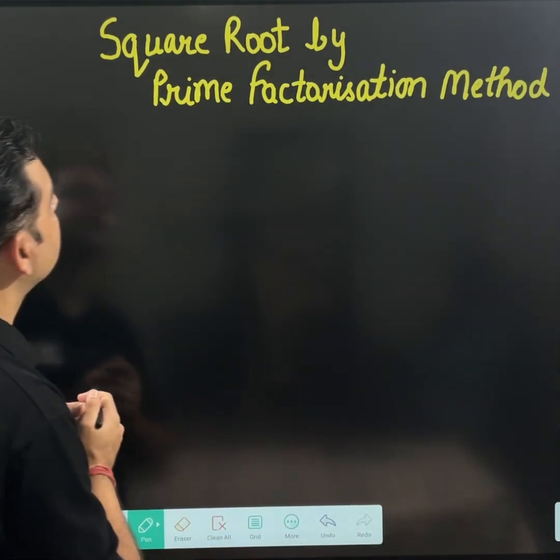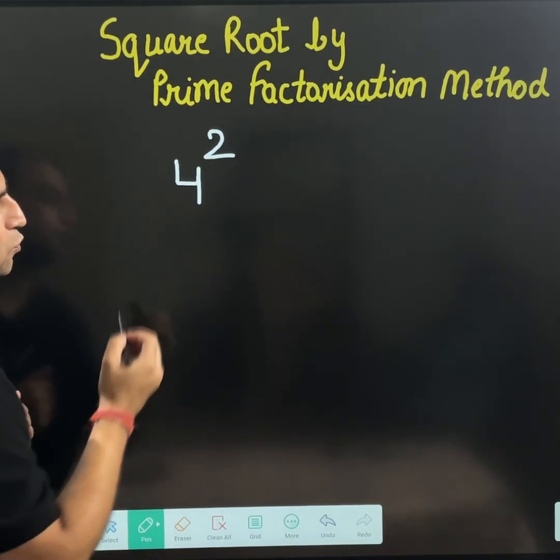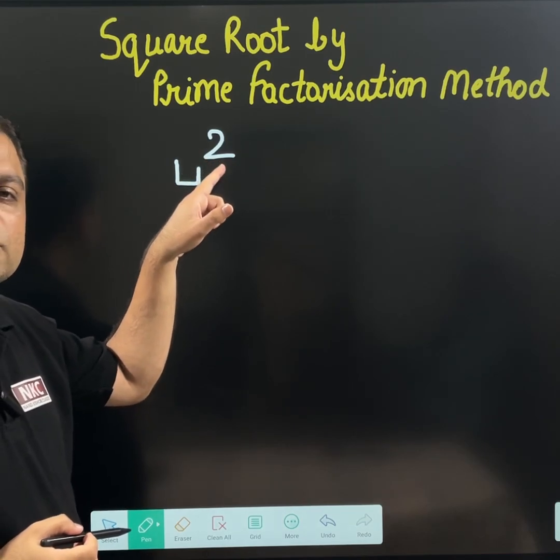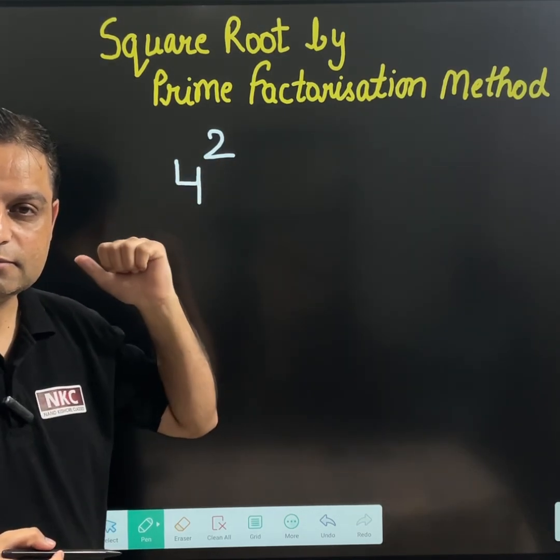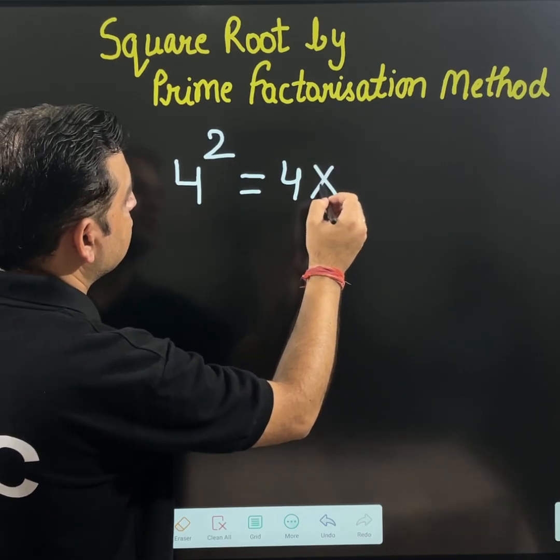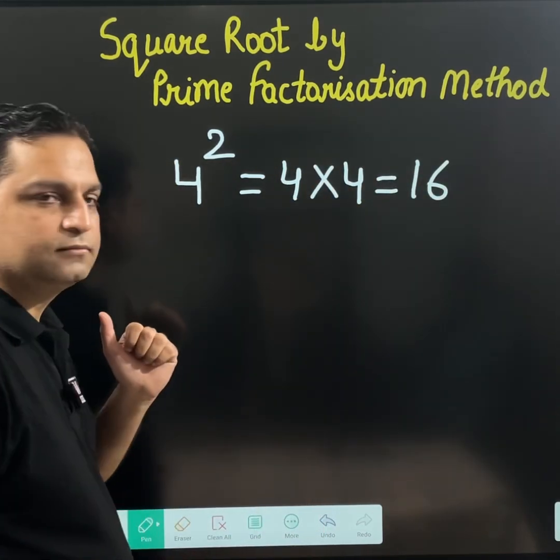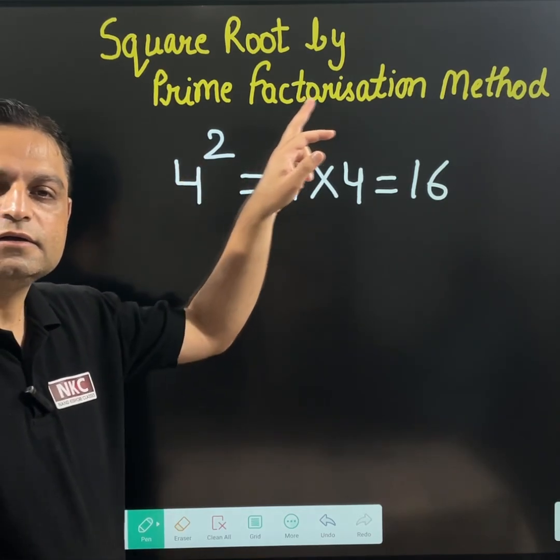So it will just take a moment. For example, let's suppose you have 4 to the power 2. This is known as 4 square and this is equal to 4 times 4 which is further equal to 16. So 4 square is 16.